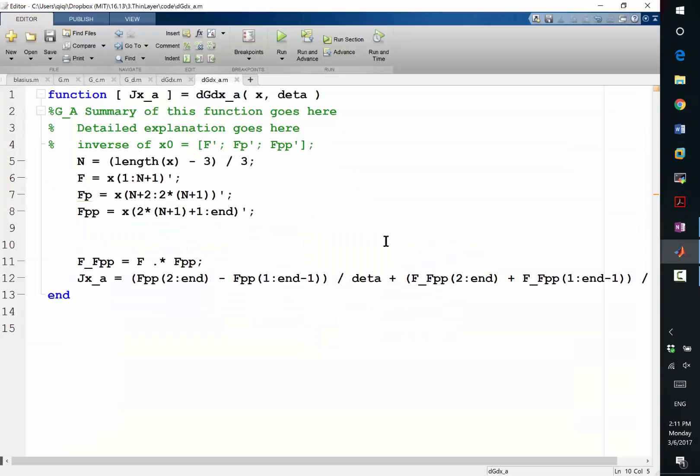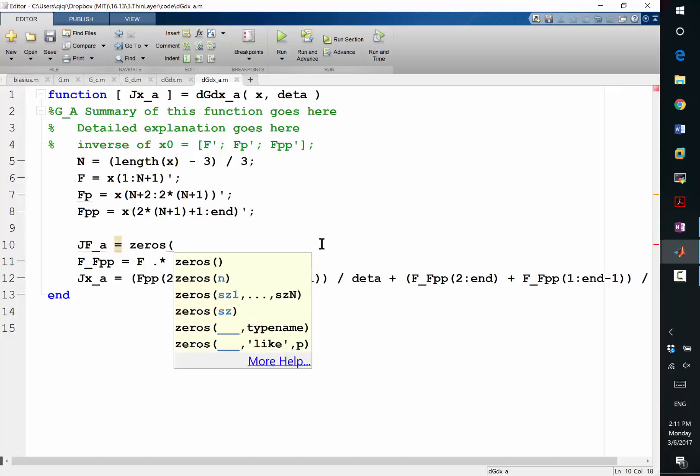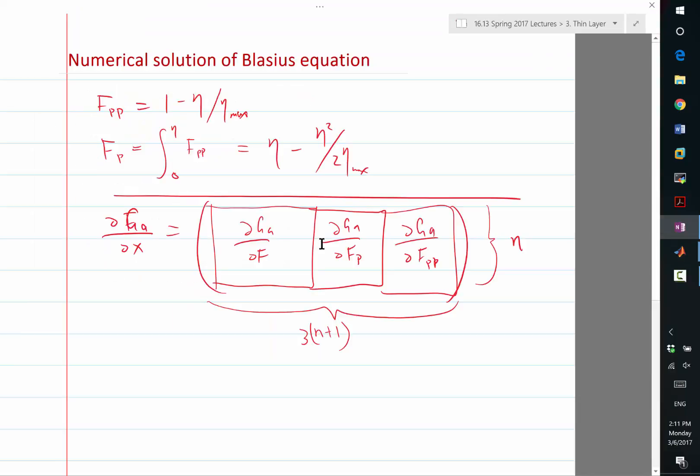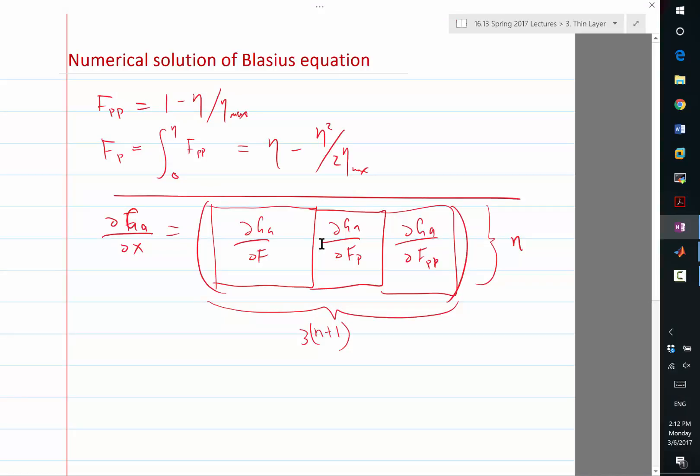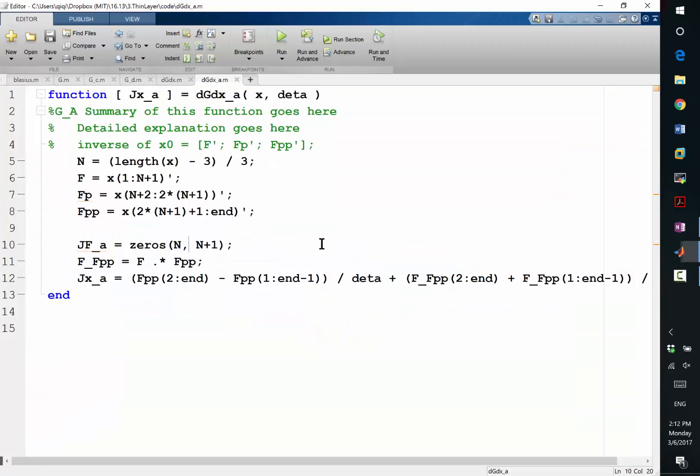The first block is the derivative of g_a with respect to what? Yes. The second block, fp. The third block, fpp. So let's compute them individually. Okay? So, let's say jf_a. That's the derivative of a to f, the first block. Okay? So let's first specify the size, right? By initializing everything to be zeros. So what is the size of the first block? n by n plus 1, right? Agreed? n rows, that's the same for all the blocks. n plus 1 is the number of variables in f. Okay?